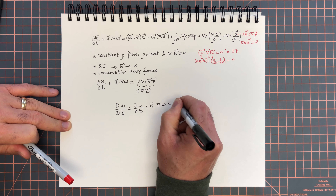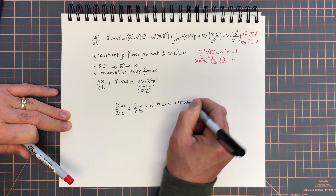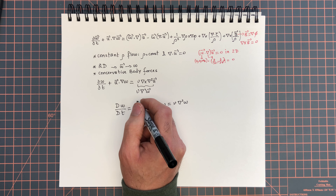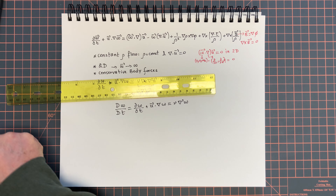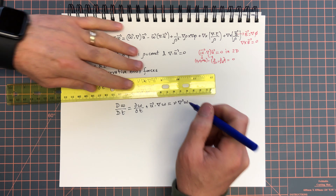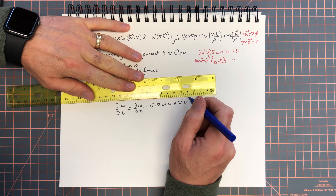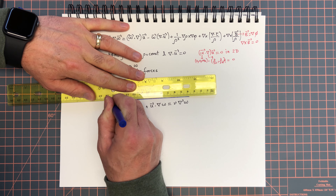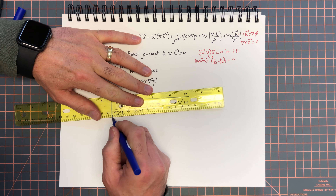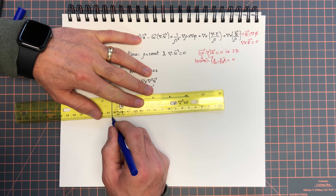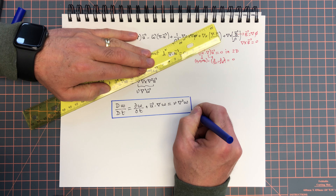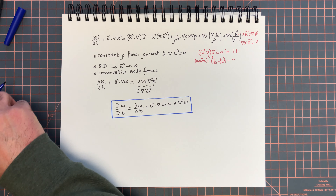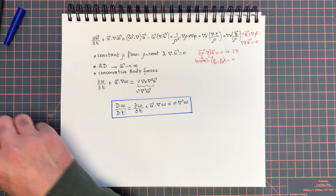We will also assume conservative body forces, meaning B equals some grad phi, and therefore curl B is equal to zero. So we add this assumption: conservative body forces.